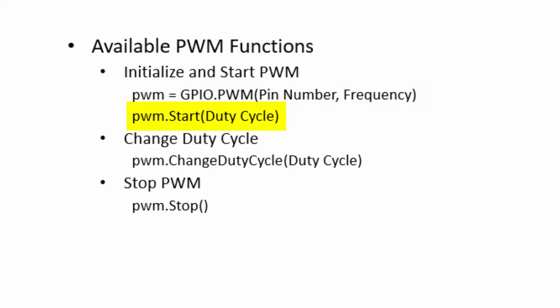The next function is used for starting the PWM at the desired duty cycle. The third function, change duty cycle, is used for changing the duty cycle at run time. The last function is used to stop the PWM cycle.